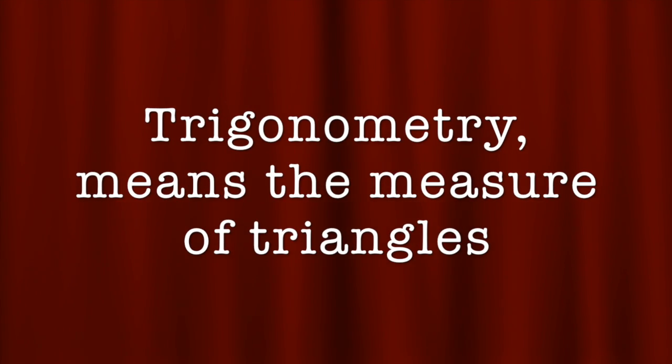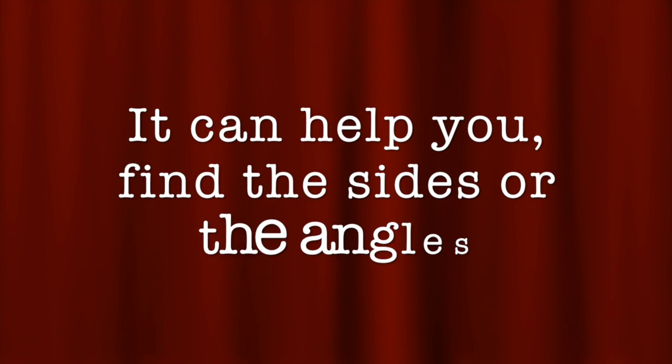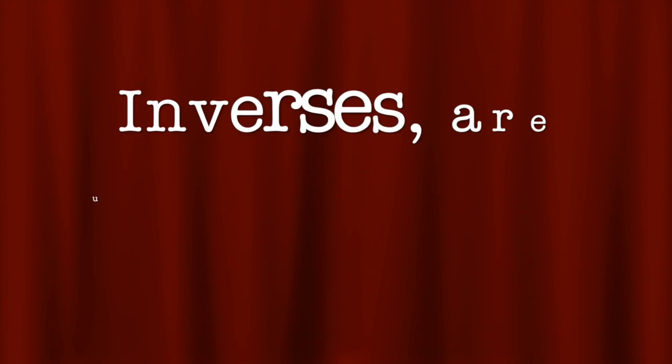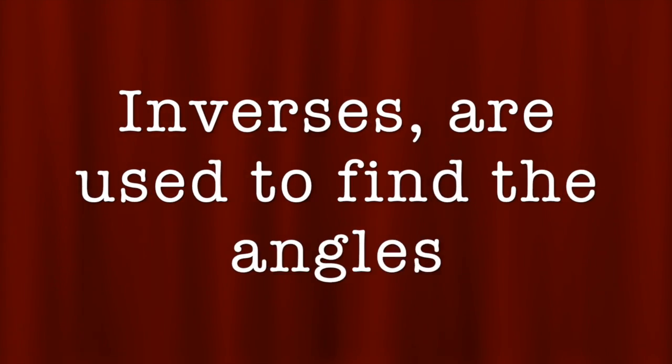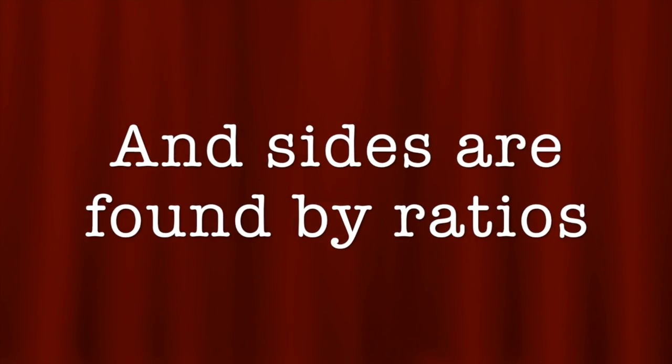Trigonometry means the measure of triangles. It can help you find the sides or the angles. Inverses are used to find the angles, and sides are found by ratios.